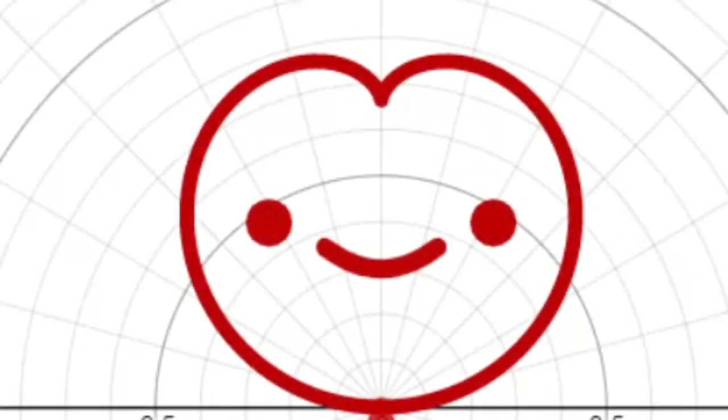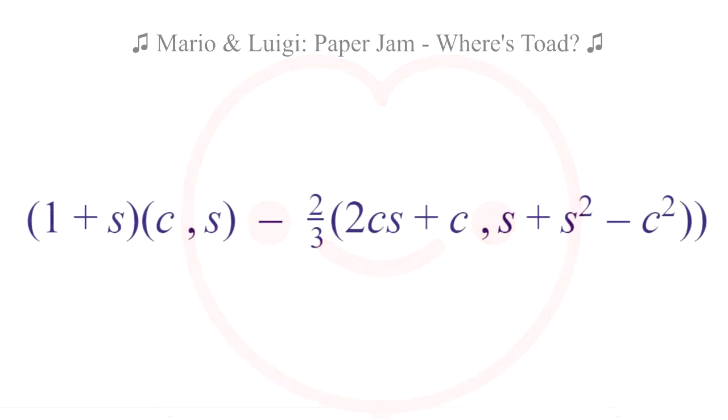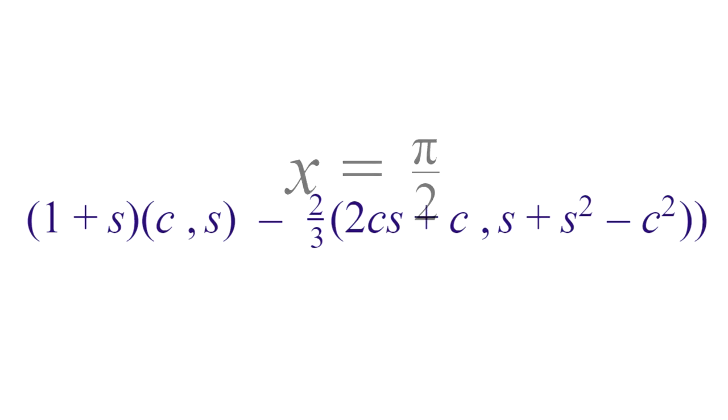Now that you are more familiar with the cardioid, let us now plot the point when the evolute is at pi over 2. By doing so, it will yield the point 0, 2 thirds.